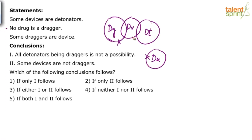So to recap: some devices are detonators; no drug is a dragger — drugs and draggers will not touch each other; and some draggers are device, so there is an overlapping here. This is the basic diagram for the given three statements.